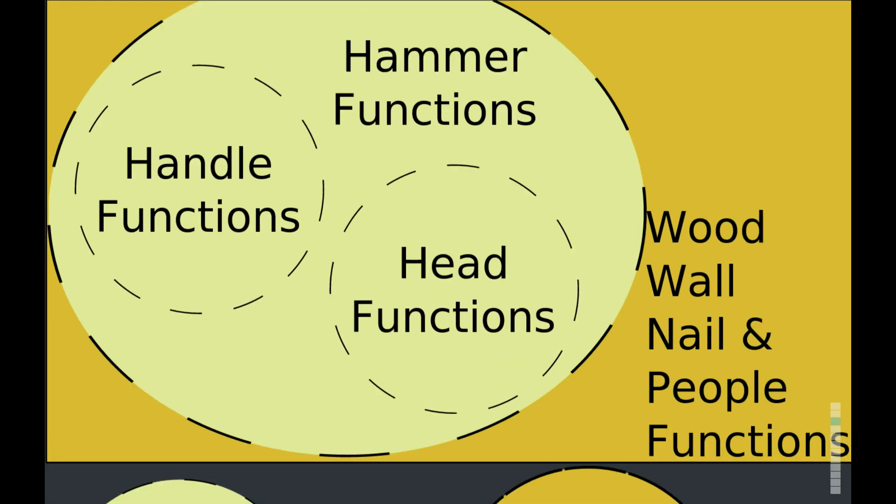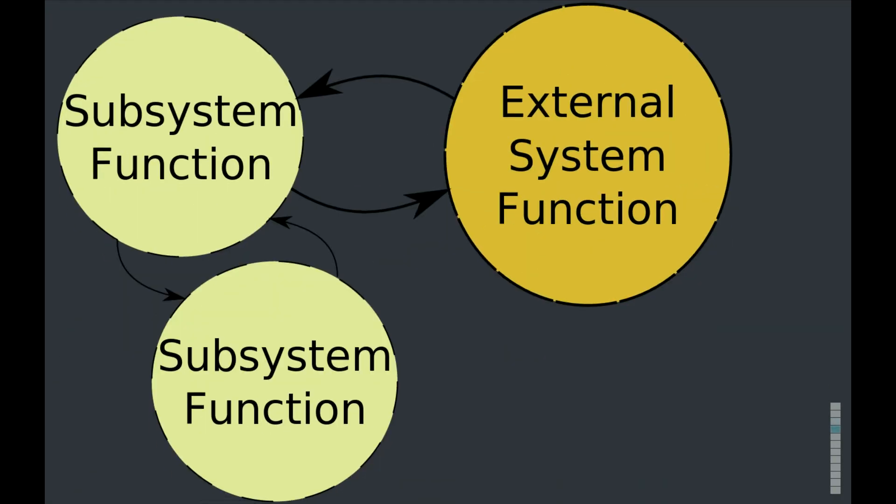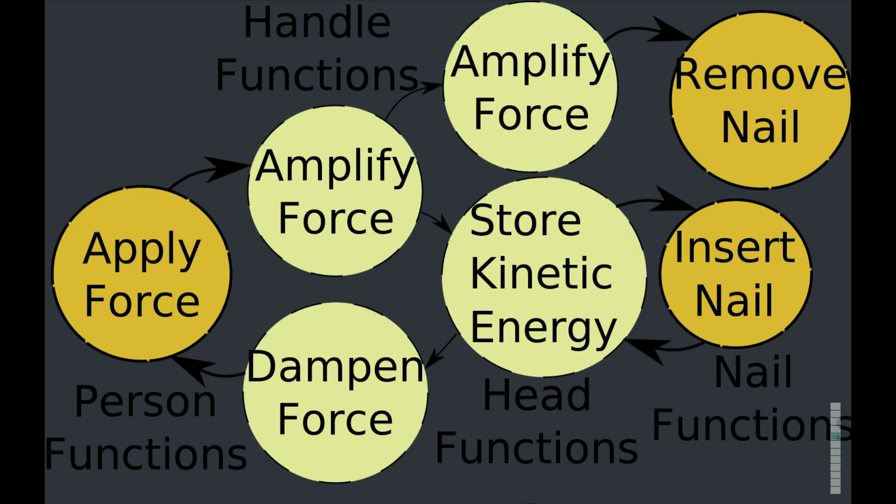System functions are actually made of the subsystem functions. A system function is fully met by its subsystem functions. So whatever interactions the system function has with external systems, those subsystems will also have with those external systems. And subsystem functions can interact with each other as well.